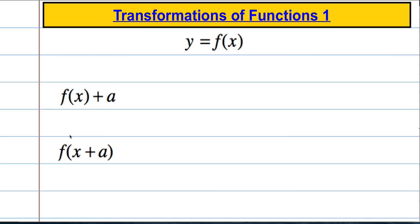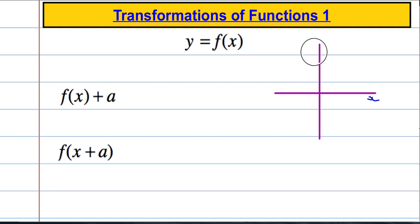Transformations of functions. The first thing we need to get to grips with is the function notation f of x. And f of x is just another way of saying y. Y is a function of x. So if we have a graph, traditionally we call this the x-axis and this would be the y-axis. Sometimes you will see that the y-axis is also referred to as f of x. So we take a value of x, put it into some function, and then we get some output f of x. So y equals f of x.